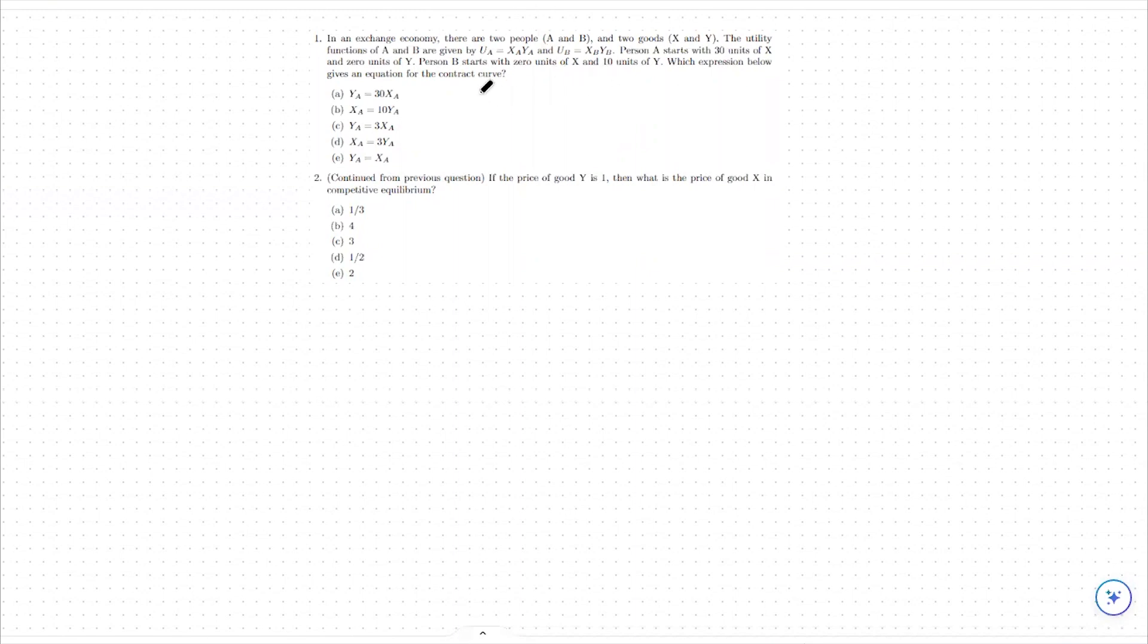Let me rewrite what's important to know from this one, which is the utility of person A is equal to xA times yA, and the utility of person B is equal to xB times yB.